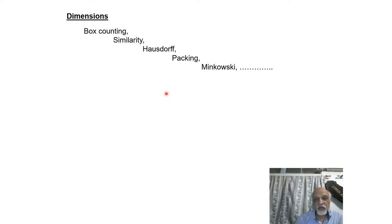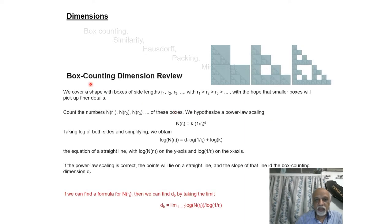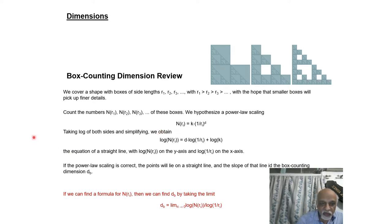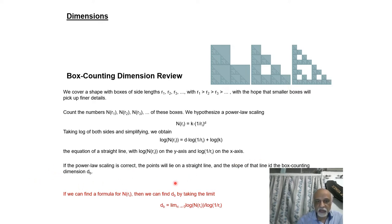Depending on usage, different people have described different kinds of fractal dimensions and all of them are correct — it depends on context. To review what we did in the last lecture: in the box counting dimension, we cover the shape with boxes of different side lengths in decreasing order. We count how many boxes N(r) are needed to cover the whole shape and assume a power law: N(r_i) = k × (1/r_i)^d, where d is the dimension.